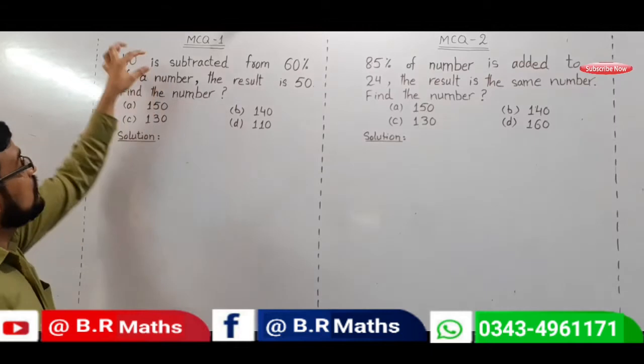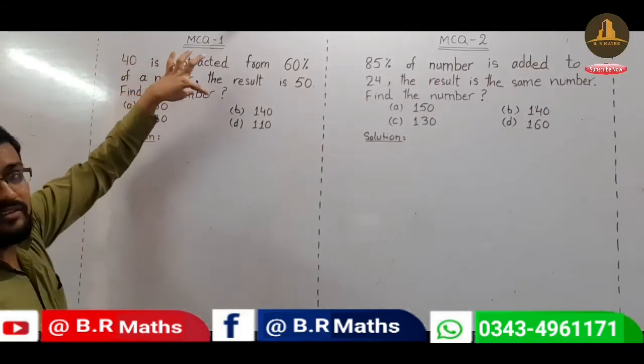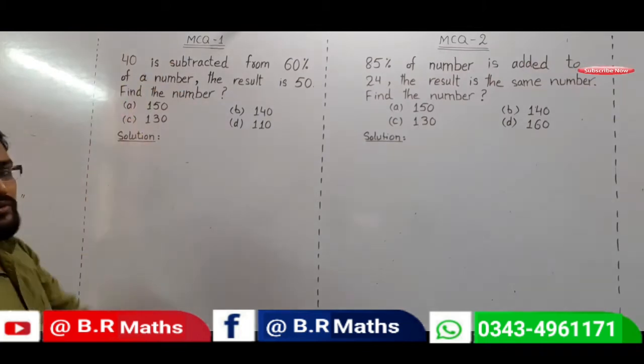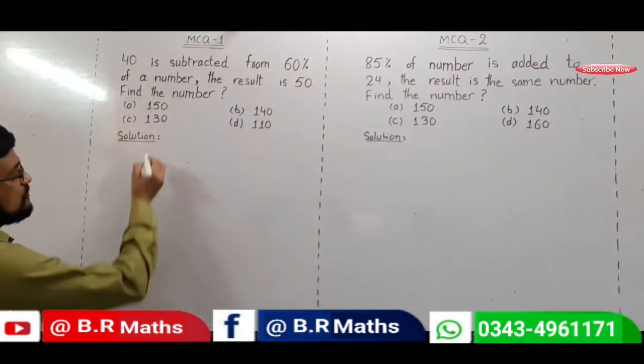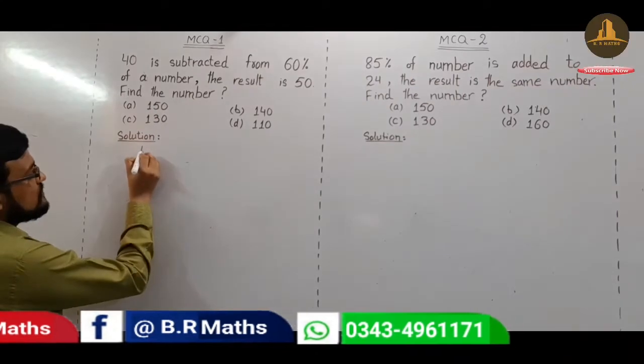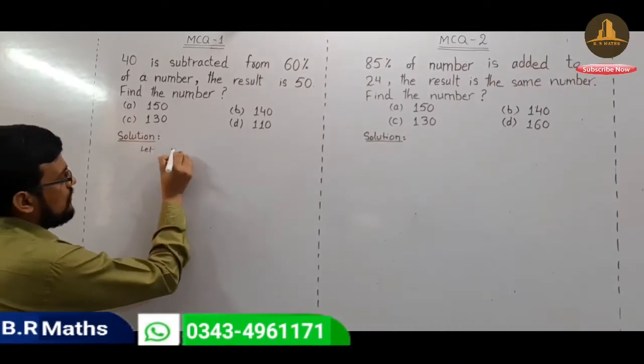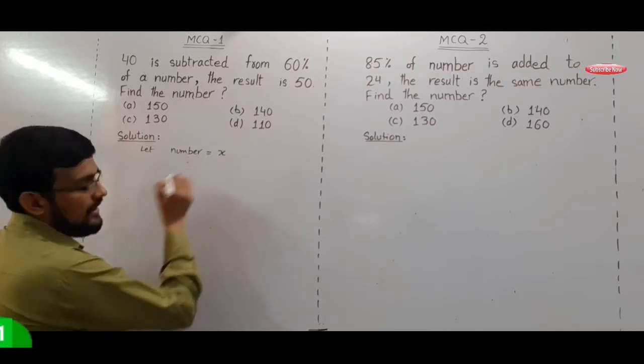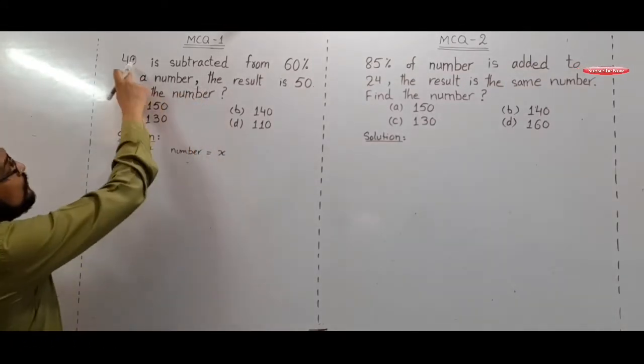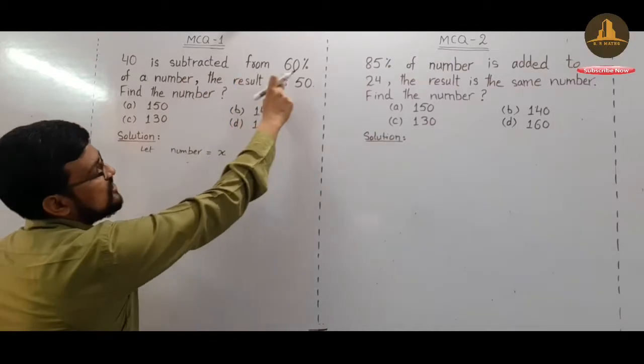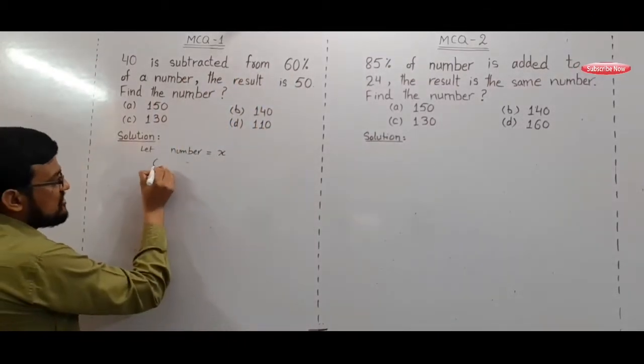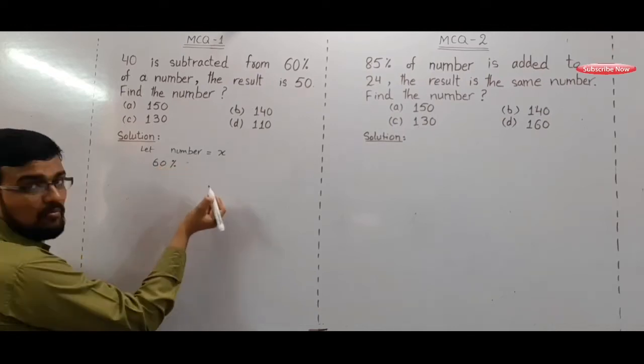Our requirement is a number, so what is the solution? First, let the number be X. 40 is subtracted from 60% of a number means 60% of the number X.